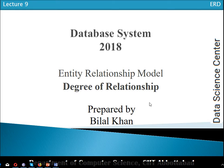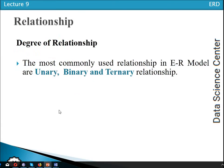For example, we can have one entity type participating in a relationship, two entity types, three entity types, and so on. The most commonly used relationships in ER models are unary, binary, and ternary relationships.